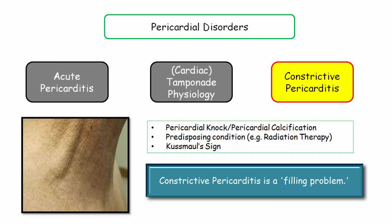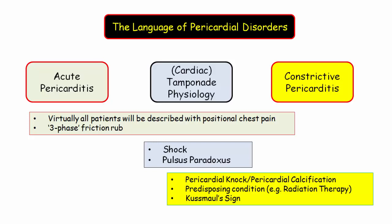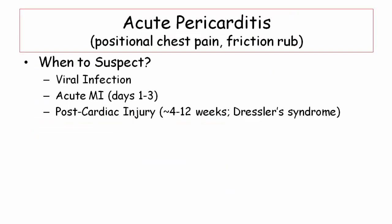So we just reviewed the key language of pericardial disorders. When a vignette includes these phrases, they are literally begging you to select the corresponding disorder and the derivative features to be discussed shortly. So with that background, let's launch into our discussion of the disorders. We'll start with acute pericarditis. Recall the setup for our patient with acute pericarditis — they will be described with positional chest pain, with or without the classic friction rub.